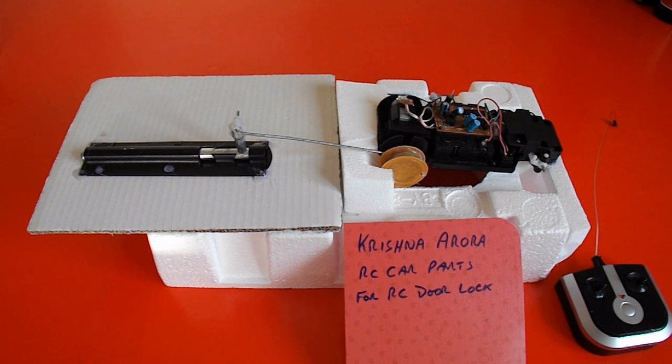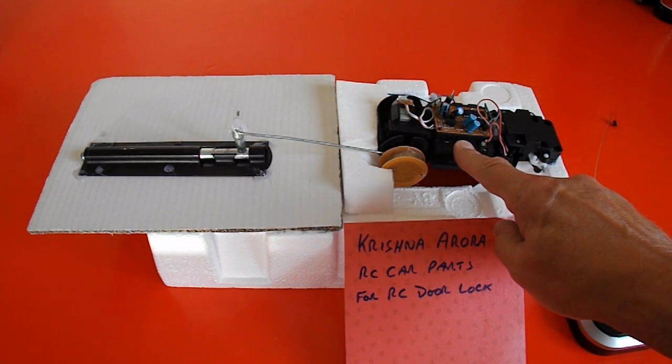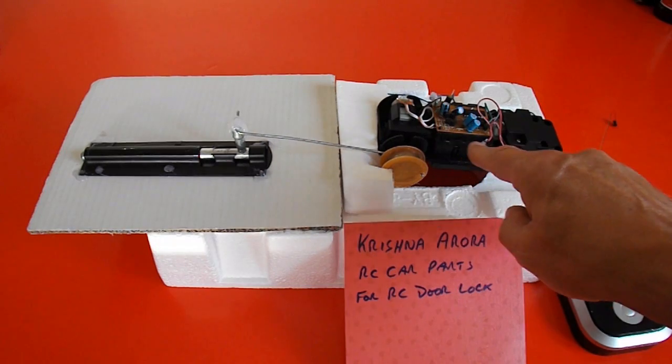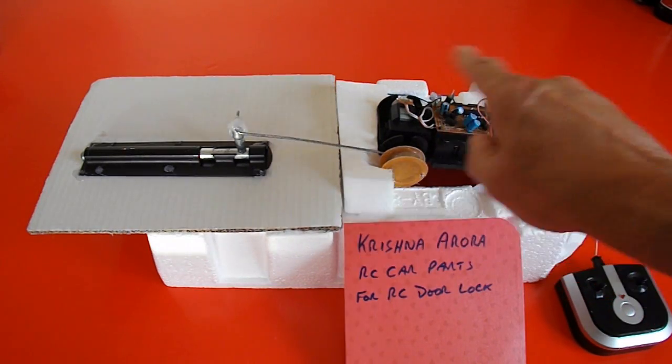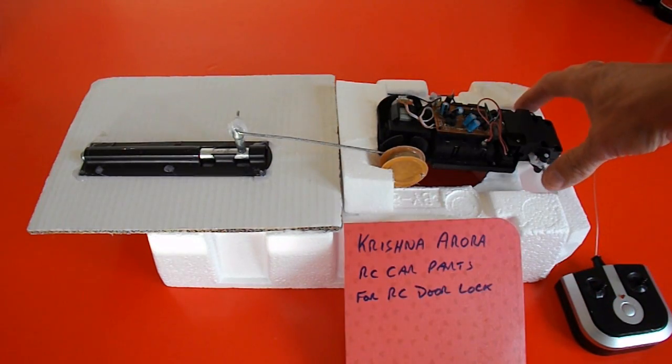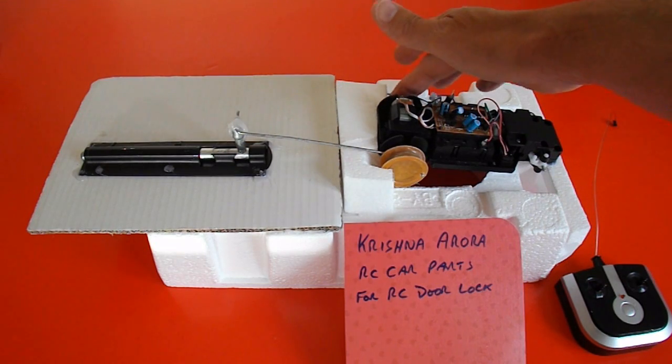Now I don't have a spare radio controlled car that I haven't already taken apart, so we're going to have to use one I've used before. This one is virtually complete, all that's missing is the cover, oh and the front wheels and one of the back wheels.